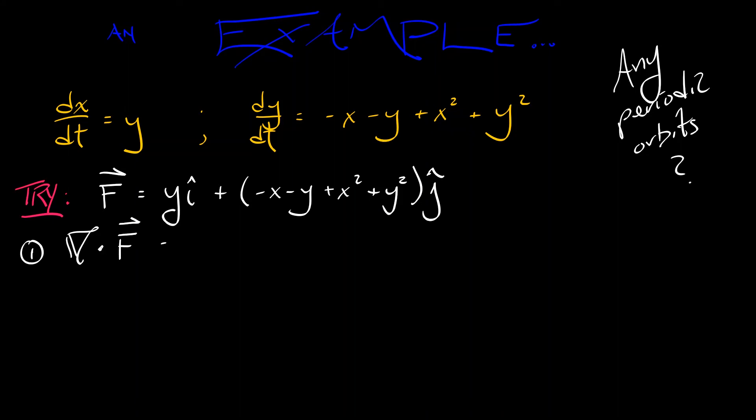y i plus quantity minus x minus y plus x squared plus y squared j. Now, the first thing to do is to just take the divergence. See what you get. The divergence of this vector field is the partial of the first term with respect to x, zero, plus the partial of the second term with respect to y. That's negative 1 plus 2 times y.